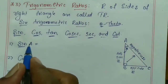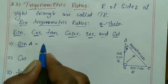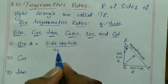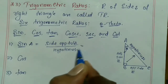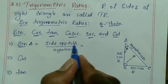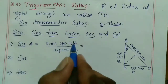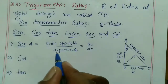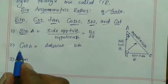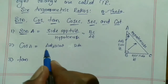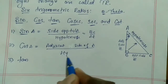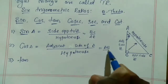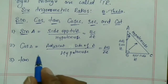Sine A equals the side opposite to angle A divided by hypotenuse, that is BC divided by AC. Cos A equals the adjacent side of angle A divided by hypotenuse, that is AB divided by AC.